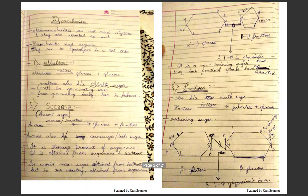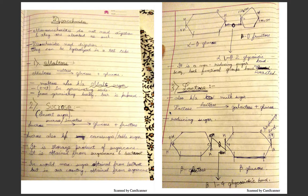Compound carbohydrates are divided into oligosaccharides and polysaccharides. Oligosaccharides are the combination of around 2 to 9 monomers. Polysaccharides are the combination of more than 9 monosaccharides.